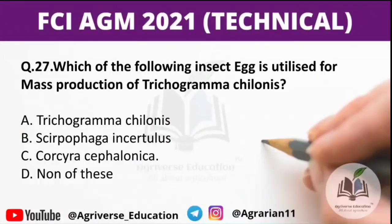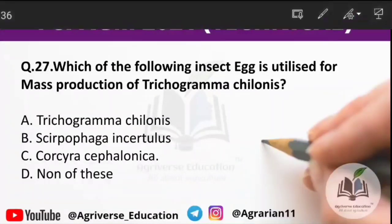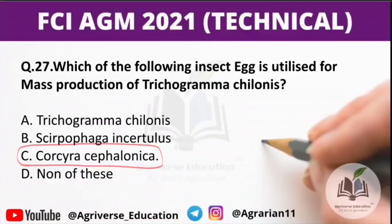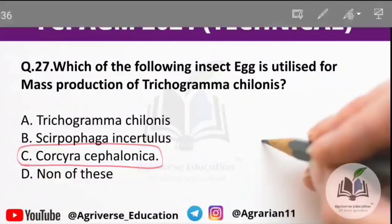Question 27: which insect's eggs are utilized for the mass production of Trichogramma chilonis? Options include Scirpophaga incertulas and Corcyra cephalonica. The right answer is option C — Corcyra cephalonica. So, the eggs of Corcyra cephalonica are utilized for the mass production of Trichogramma chilonis.